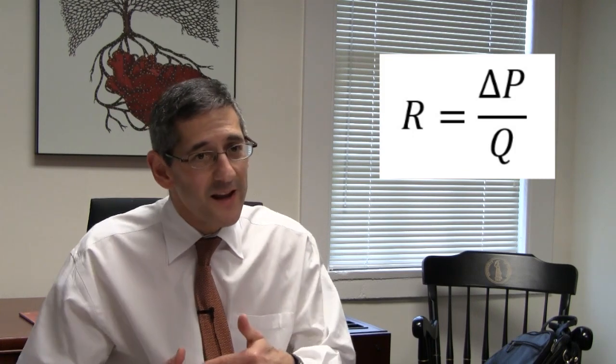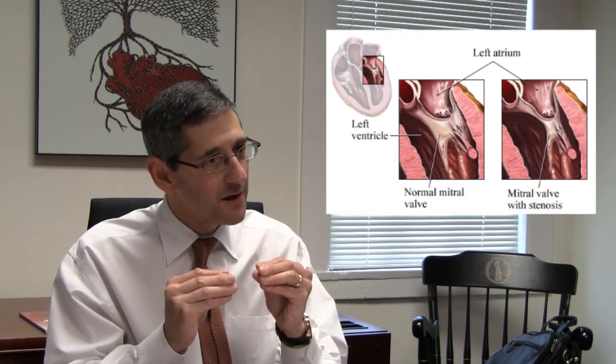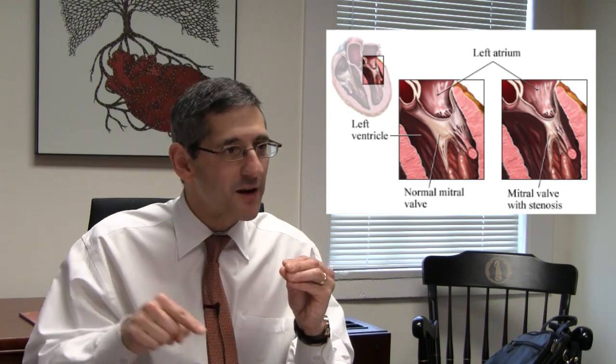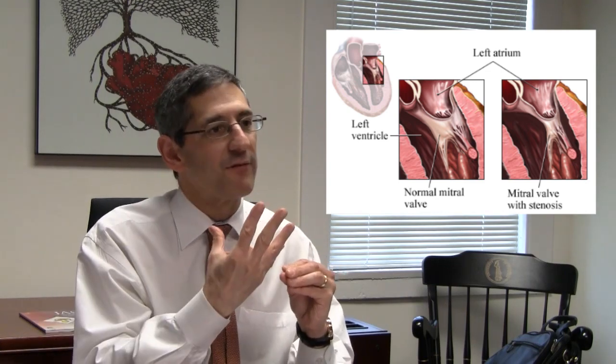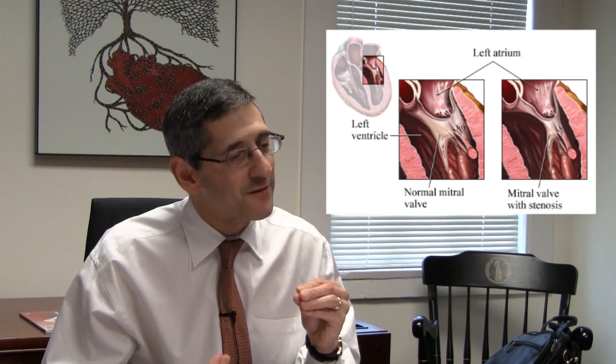If I have a blockage that is moderate, my pressure gradient will be much higher if I have really high flow rates through it, and much lower if I have very low flow rates. A good example of that is a hose — if you kink off a hose, the pressure gradient across that kink is much higher if you have the water turned up all the way versus if you just have a dribble going through it.